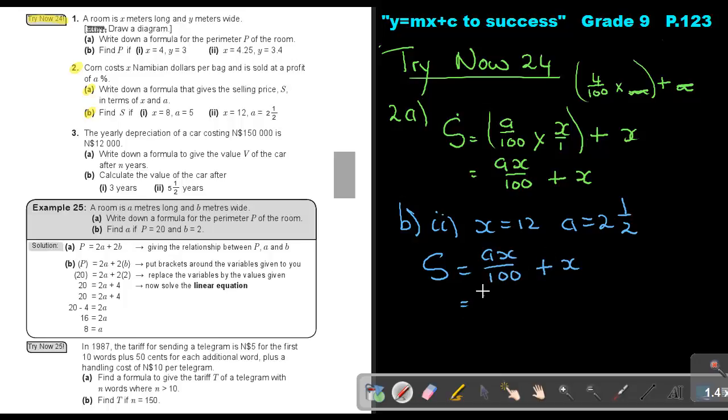So it's 2.5 and I multiply it by 12 and divide it by 100 and I plus that 12 again. And if I do that, I will come to an answer of 12.30. That will be my selling price.